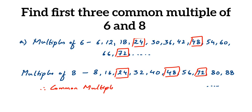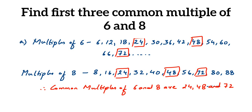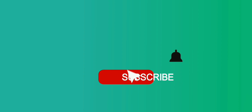Therefore, the common multiples of six and eight are: first, twenty-four; second, forty-eight; and third, seventy-two. I hope this question is clear. If you have any further questions or doubts, you can drop a comment. Thank you so much for watching.